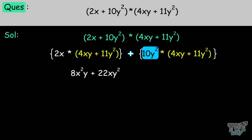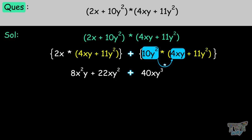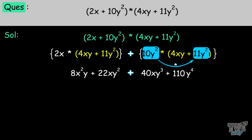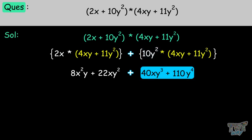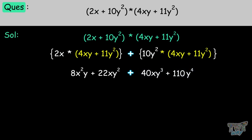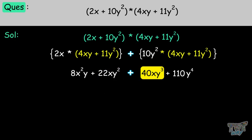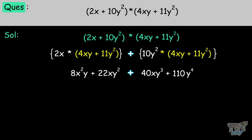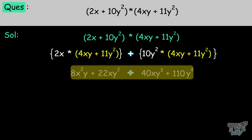Now we multiply 10Y squared with 4XY and 11Y squared. 10Y squared times 4XY becomes 40XY cubed. And 10Y squared times 11Y squared becomes 110Y to the power of 4. There are no like terms among any of the four results — 8X squared Y, 22XY squared, 40XY cubed, and 110Y to the power of 4 — so this is our final answer, the product of two binomials.